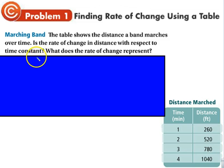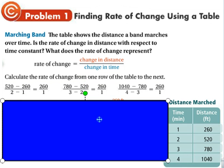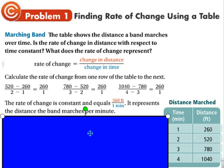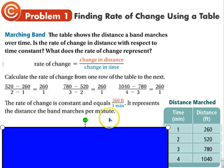The table shows the distance a band marches over time. Is the rate of change in distance with respect to time constant? As distance increases, is it increasing at the same rate as time? The change in distance is over the change in time. They're all 260 over 1 — every minute we march another 260 feet, so it is constant. The rate of change represents the distance the band marches per minute.